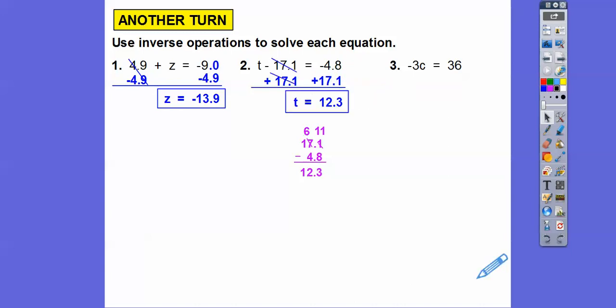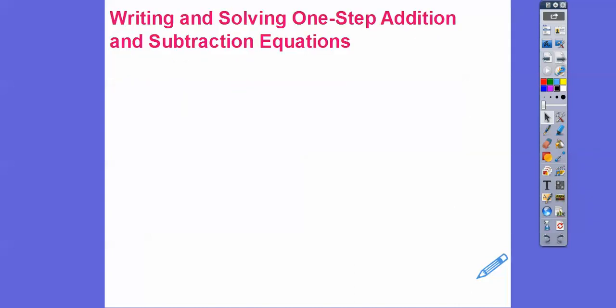Okay, so here we're going to divide, because this is negative 3 times C, so we're going to divide both sides by negative 3. So when we divide by negative 3, we get C equals negative 12. All right, so writing and solving one-step equations, one-step addition and subtraction equations.